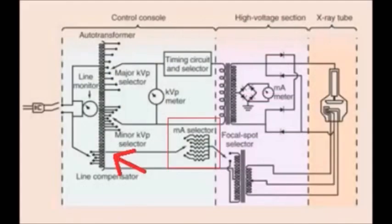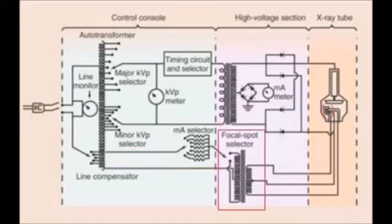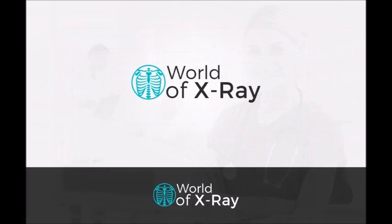Back to the auto transformer: on the filament circuit, secondary power from the auto transformer goes to the rheostat, which is an mA selector attached to the focal spot selector. Low mA associates with a small focal spot and high mA with a large focal spot. The step-down transformer reduces voltage from the rheostat before heating up the filament to create thermionic emission. Those electrons are fired off to the positively charged anode, creating bremsstrahlung and characteristic radiation.